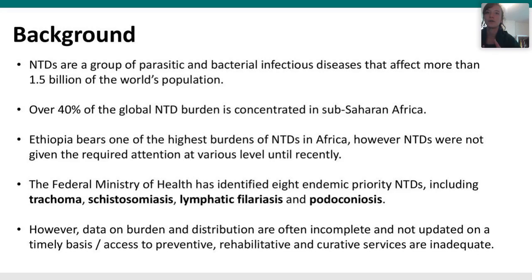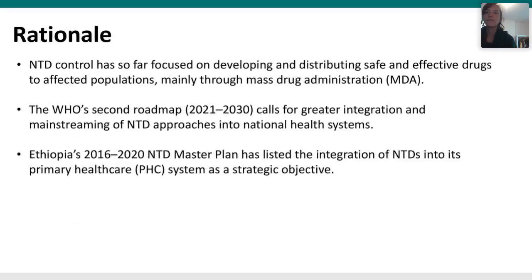NTDs were not really given the required attention until recently. The Federal Ministry of Health in Ethiopia has identified eight endemic priority NTDs, including trachoma, schistosomiasis, lymphatic filariasis, and podoconiosis — those four diseases are the focus of our project. Data on burden and distribution are often incomplete and not updated on a timely basis, and access to services is inadequate.